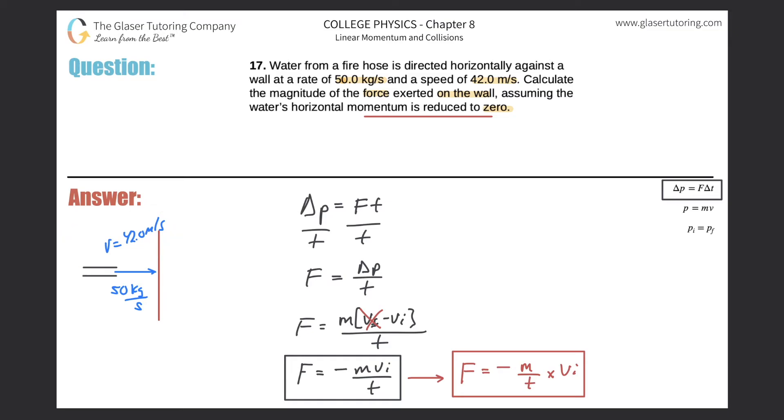And they told us the initial velocity of the water was 42 meters per second. Cool. So guess what? Plug it all in. So here, the force now is equal to negative the mass per time value, which was 50.